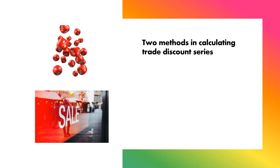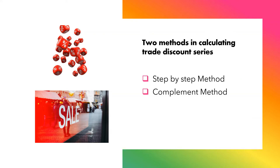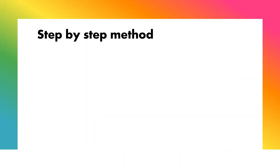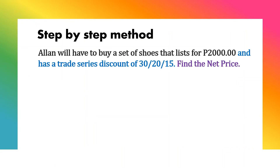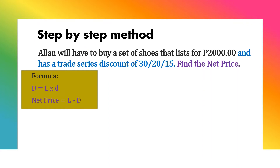We have two methods for calculating a trade discount series: the step-by-step method and the complement method. For the step-by-step method, consider this example: Alan will buy a set of shoes listed at 2,000 pesos with a trade discount series of 30%, 20%, and 15%. Find the net price. The formulas are: trade discount equals list price times discount rate, and net price equals list price minus trade discount.